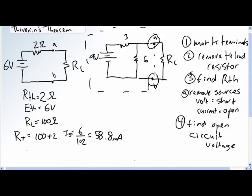We can do an easy voltage divider rule to find VL, the voltage across the load resistor, where it's 100 divided by 100 plus 2 times 6 volts. So 100 divided by 102 times 6 equals 5.882 volts. Pretty simple calculations.